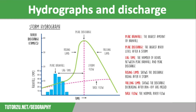After a storm event the river will return to its base flow, because the water flowing into it is from groundwater flow. This is through rocks and therefore it is a much slower flow.